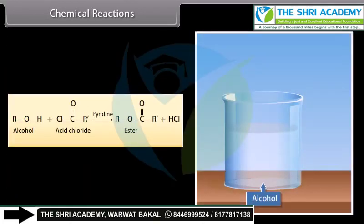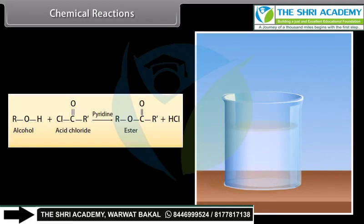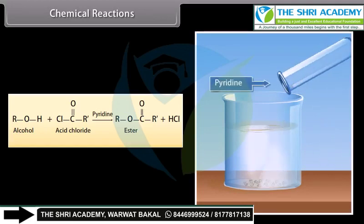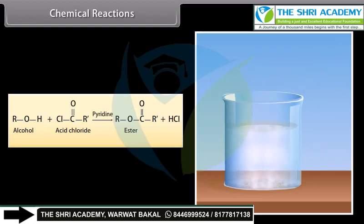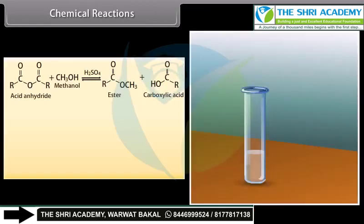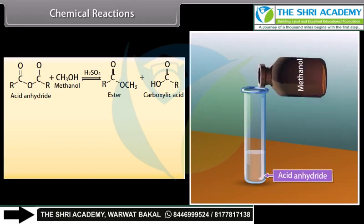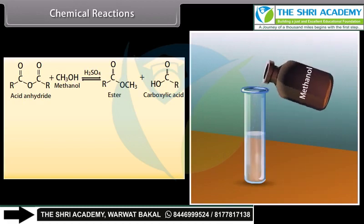Alcohol reacts with acid chloride in the presence of pyridine to form ester and hydrochloric acid. Methanol reacts with acid anhydride in the presence of sulfuric acid to form an ester and a carboxylic acid.